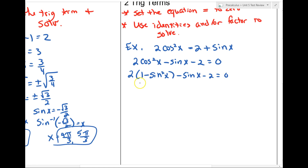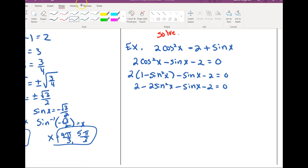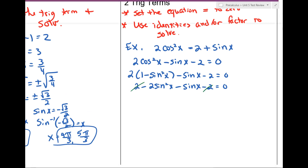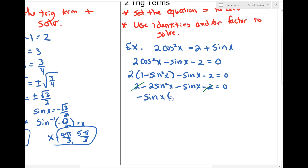So: 1 − sin²x − sinx − 2 = 0. Distributing gives: −2sin²x − sinx − 2 + 2 — wait, let me restate: after substituting and distributing I get −2sin²x − sinx, and the constants 1 and −2 simplify out, leaving me with just sin²x and sinx terms. I don't like negatives, so I'm going to factor out a negative sinx.